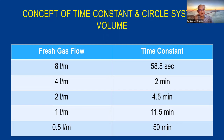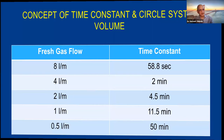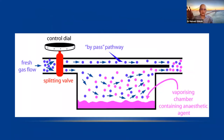The key principle: when gas flows are high, time constants are low; when gas flows are low, time constants are high. To rapidly deepen a patient, you must increase both the dial setting and the fresh gas flow — changing only the dial without increasing flow will not rapidly deepen the patient. Increasing flow sends more molecules through the vaporizer chamber, picking up more vapor and delivering it faster to the patient's brain.